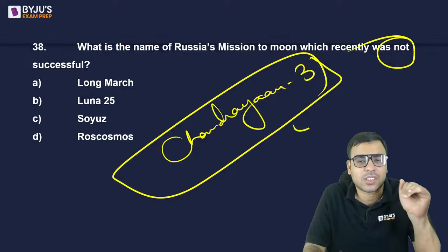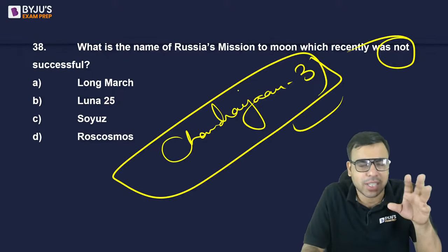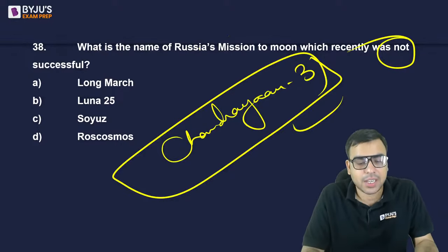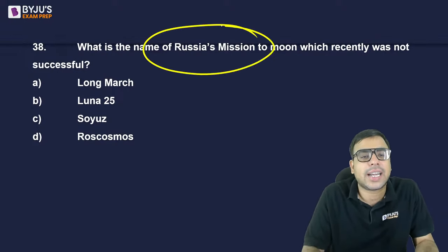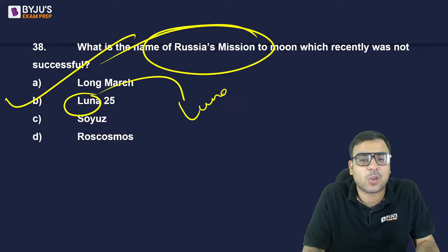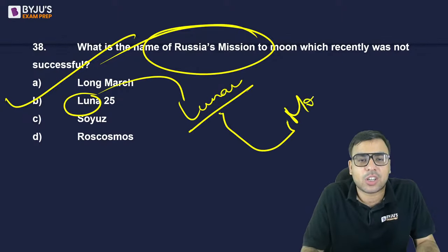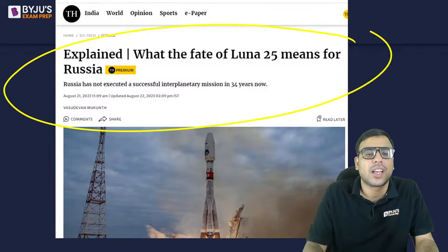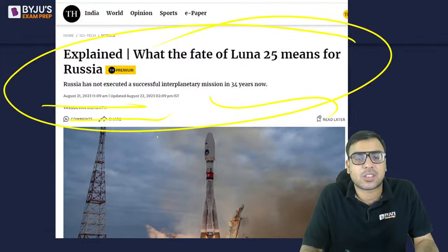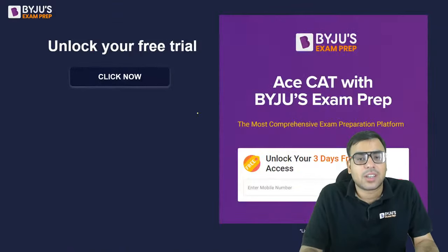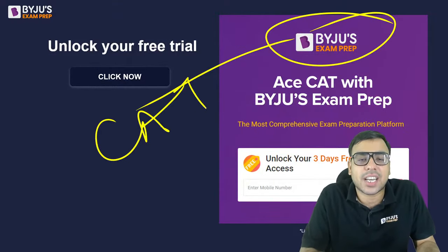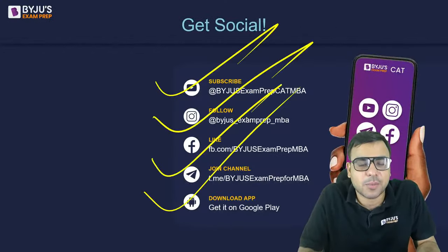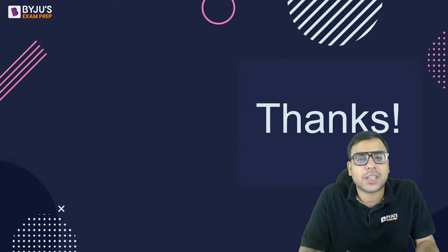Russia had a mission that was in the news around August-September but was not successful — what was it called? The right answer is B — Luna 25. 'Luna' means moon. Russia's Luna 25 lunar mission was not successful. This is all about today's class. Download the app, go to the CAT section for a three-day free trial. Please subscribe to our channel and follow us on Instagram, Facebook, and Telegram.